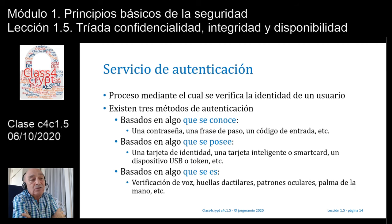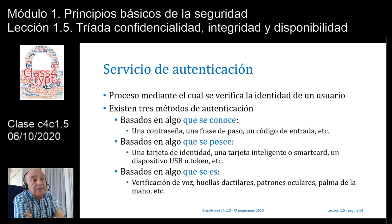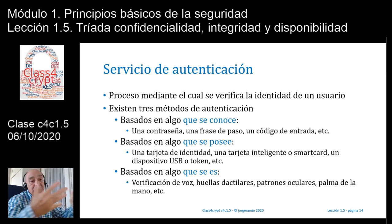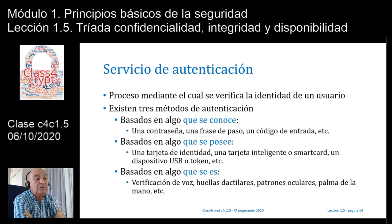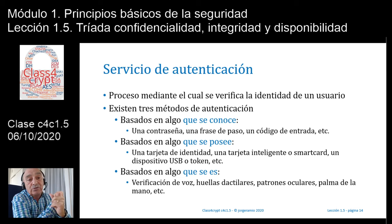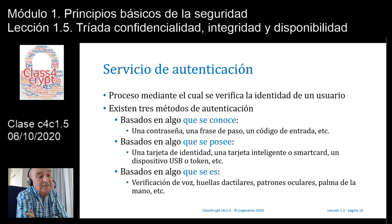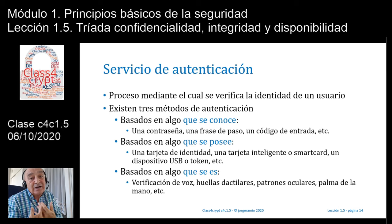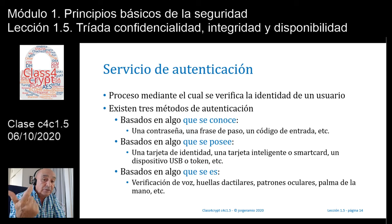Y por último, existe la autenticación basada en algo que se es. ¿Cómo sería esta autenticación? Sencillamente, verificación de voz, verificación de huellas dactilares, verificación de patrones oculares, el fondo del iris, palma de la mano, etcétera. Esto está muy orientado a lo que se llama la biometría: aspectos biométricos que tienen los seres humanos que pueden diferenciarlos. Las huellas de la palma son todas distintas, las huellas dactilares también, el fondo del iris también. La verificación de voz es un poquito más complicada, porque hay gente que imita casi perfectamente a otra persona. Son tres tipos de autenticación: lo que se llama autenticación por un factor, por dos factores o por tres factores.